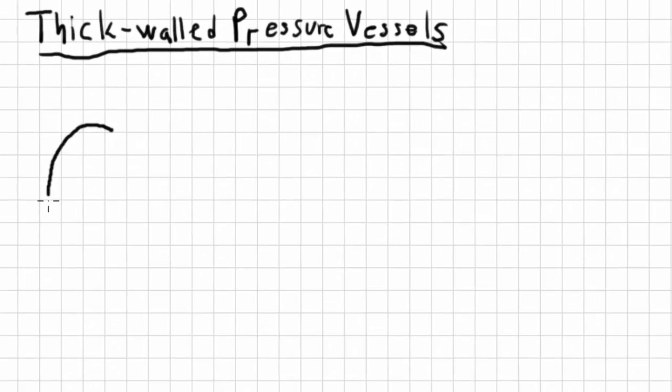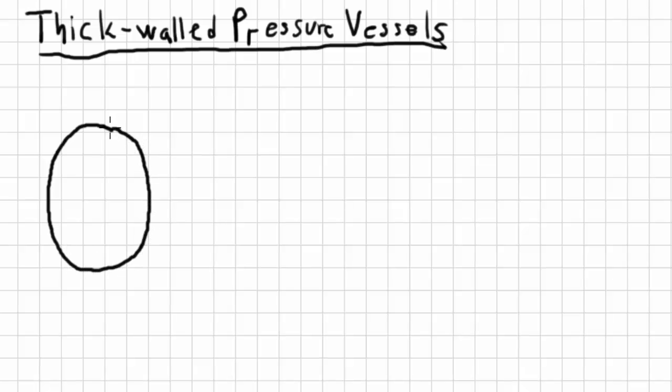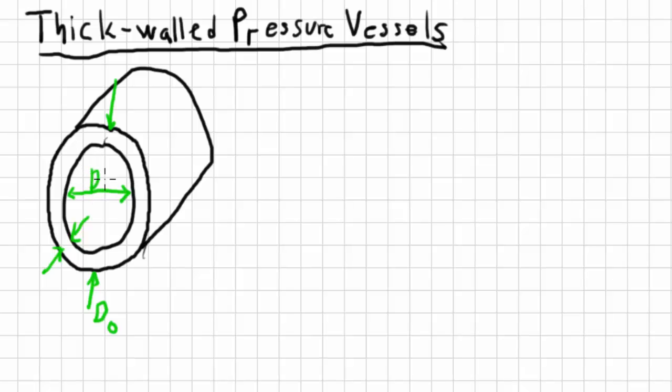I'm going to make a cylindrical pressure vessel here and make sure it's got a fairly thick wall. We have some dimensions to work with: the outer diameter, the inner diameter, and the wall thickness. We'll refer to the outer diameter as DO, inner as DI, and the wall thickness as T.